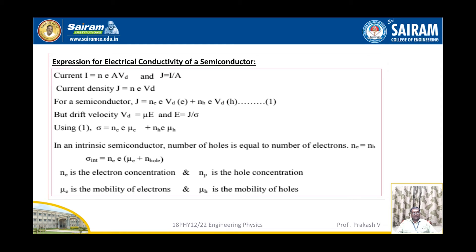The drift velocity V_D is equal to mu times E, and further E is equal to J by sigma. Using equation 1, we can write sigma is equal to Ne times E times mu_E plus Nh times E times mu_H. In an intrinsic semiconductor, the number of holes is equal to the number of electrons, that is Ne equals Nh. Therefore, sigma_intrinsic is equal to Ne times E times (mu_E plus mu_H), where Ne is the electron concentration, Nh is the hole concentration, mu_E is the mobility of electrons, and mu_H is the mobility of holes.